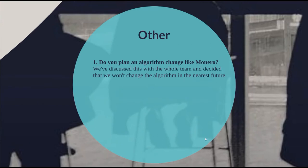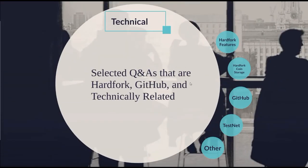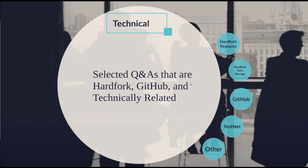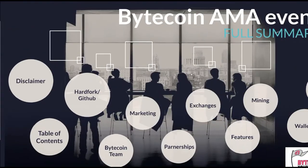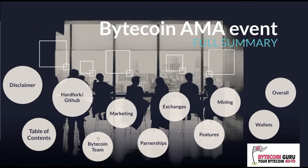Under other technical topics: 'Do you plan an algorithm change like Monero?' They discussed this with the whole team and decided they will not change the algorithm in the nearest future. So no algorithm changes for now — just getting better, faster, and stronger.